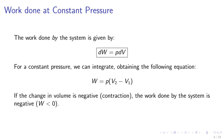The work done at constant pressure. The work done by the system is given by DW equals PDV. For a constant pressure, we can integrate and obtain the following equation: W equals P times (V2 minus V1). If the change in volume is negative, the work done by the system is negative also.